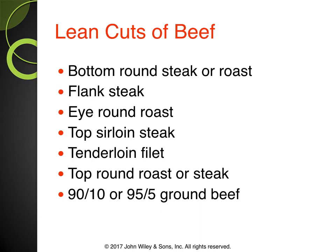Here are some lean cuts of beef: bottom round steak or roast, flank steak, eye round roast, top sirloin steak, tenderloin filet, top round roast or steak, and 90/10 or 95/5 ground beef. If these are too expensive, you can stretch the meat a little by supplementing with a plant-based protein like beans in your tacos. That's one way to stretch your meat — or you can have beef every other day or three days a week and alternate with other proteins.